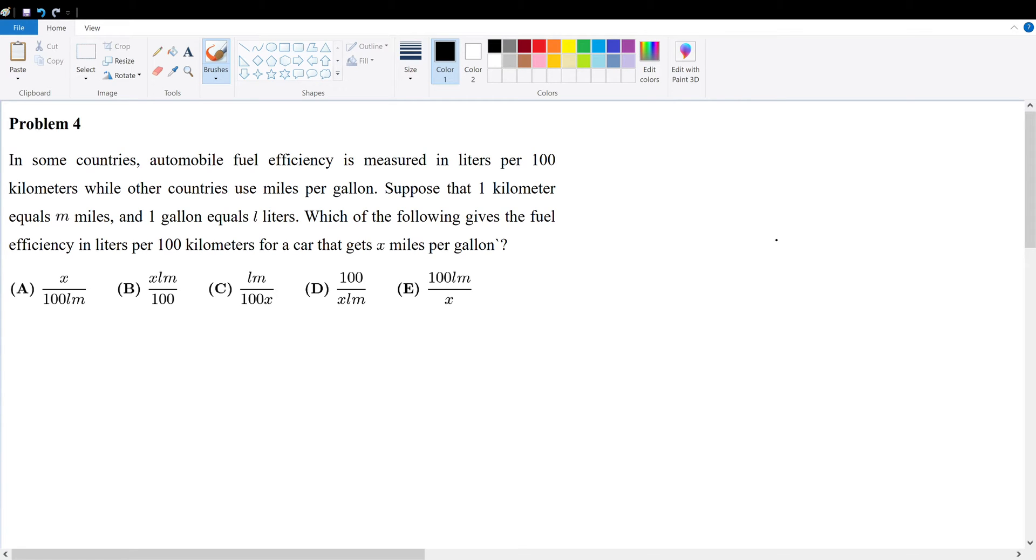In some countries, automobile fuel efficiency is measured in liters per hundred kilometers while other countries use miles per gallon. Suppose that one kilometer is equal to m miles. Also suppose that one gallon is equal to l liters. We're trying to find the given answer choice that expresses the efficiency in liters per hundred kilometers for a car that goes x miles per gallon.